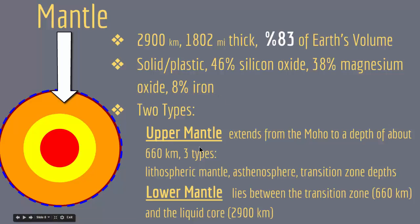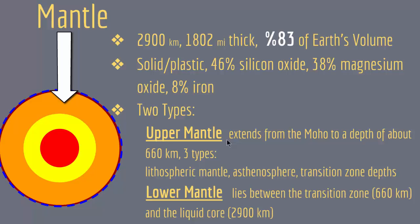The different rock behaviors divide the mantle into two zones: the upper mantle and the lower mantle. The upper mantle extends from the Moho to a depth of about 660 kilometers, and includes the lithospheric mantle, the asthenospheric mantle, and the transition zone. The lower mantle lies between the transition zone at 660 kilometers and the liquid core. Rocks in the upper mantle are cool and brittle, while rocks in the lower mantle are hot and soft but not molten. Because upper mantle rocks are brittle enough to break under stress, most earthquakes are produced in this region.